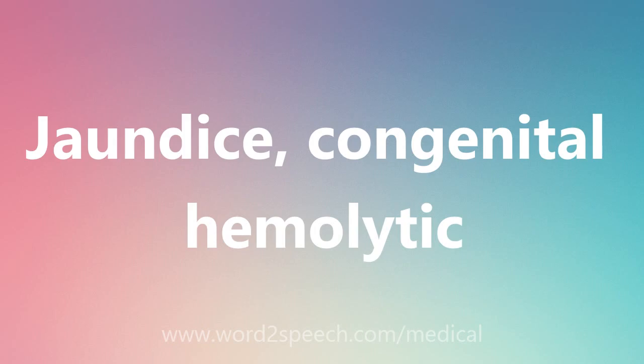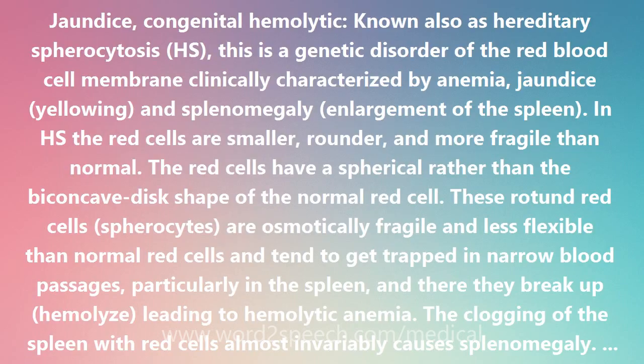Jaundice, congenital hemolytic, also known as hereditary spherocytosis (HS). This is a genetic disorder of the red blood cell membrane, clinically characterized by anemia, jaundice (yellowing), and splenomegaly (enlargement of the spleen).